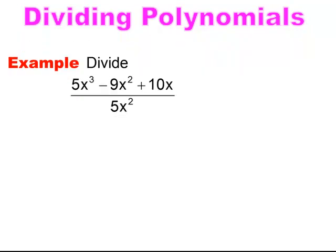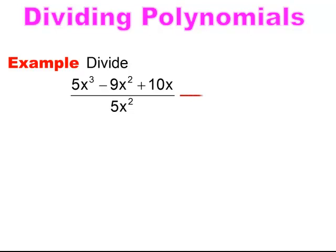Notice this next example. Again, I'm doing a polynomial divided by a monomial. I'm going to separate it into three separate problems and simplify piece by piece. For my first piece, I see that the 5's are going to cancel. x to the third on top over x squared — I'm going to simplify by subtracting the exponents. The highest exponent is on top, so it simplifies to just x. No coefficient of 1, just leave it as x.